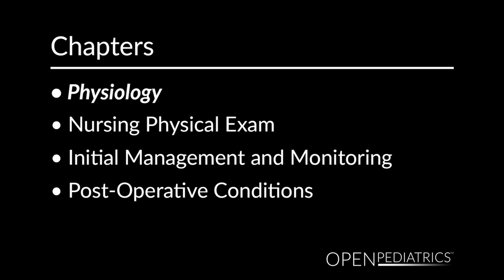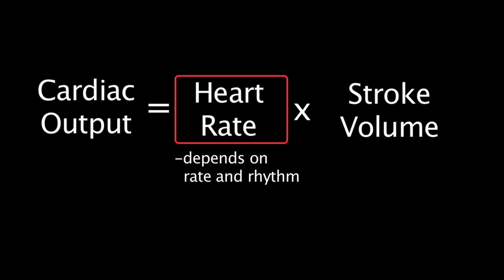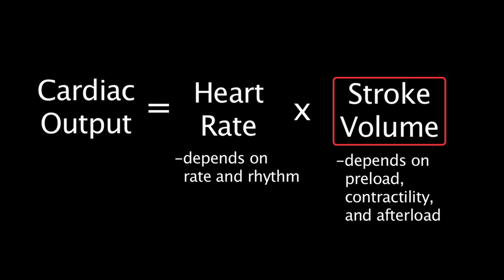Physiology. In order to give the next several slides context, it's important to understand this formula: cardiac output equals heart rate times stroke volume. Specifically, heart rate depends on both rate and rhythm. Stroke volume depends on preload, contractility, and afterload.